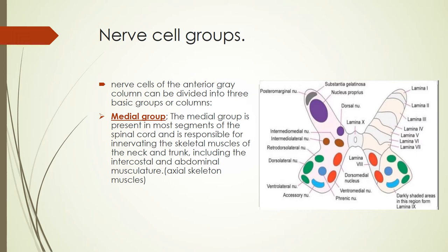The neurons of the ventral gray column are arranged in several discrete and elongated groups or columns, also called collections of nuclei. In the central nervous system, a collection of nerve cell bodies is called a nucleus. The nerve cells of the anterior gray column can be divided into three basic groups: the medial group, the central or intermediate group, and the lateral group.